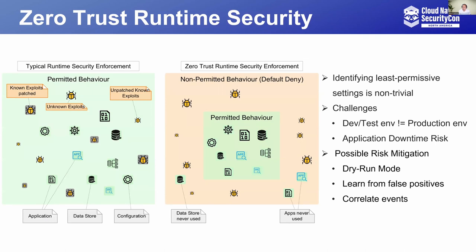One of the zero-trust tenets is to identify the least permissive security posture of an application — meaning identifying the allowed behavior and denying or auditing everything else. Note that the same container image might behave in different ways in different environments, so it is important to identify the application behavior in its given deployment. This mode could essentially enable protection from zero-day attacks. However, identifying the security posture is non-trivial, and there are real risks of impacting application runtime behavior and in the worst case causing application downtime.